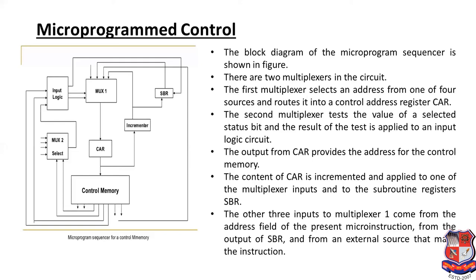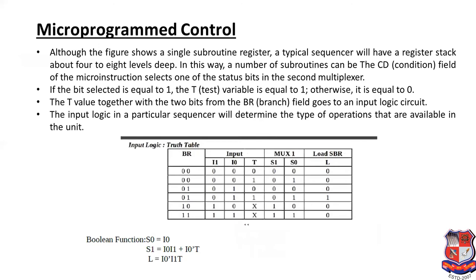Here you can see the diagram of the micro program sequencer for control memory. With a typical commercial sequencer, only a single subroutine register is available. The micro program control unit can execute subroutines in parallel at 4 or 8 levels. Since there is only a single subroutine register, the status bit is either 1 or 0 depending on the value of the test condition.